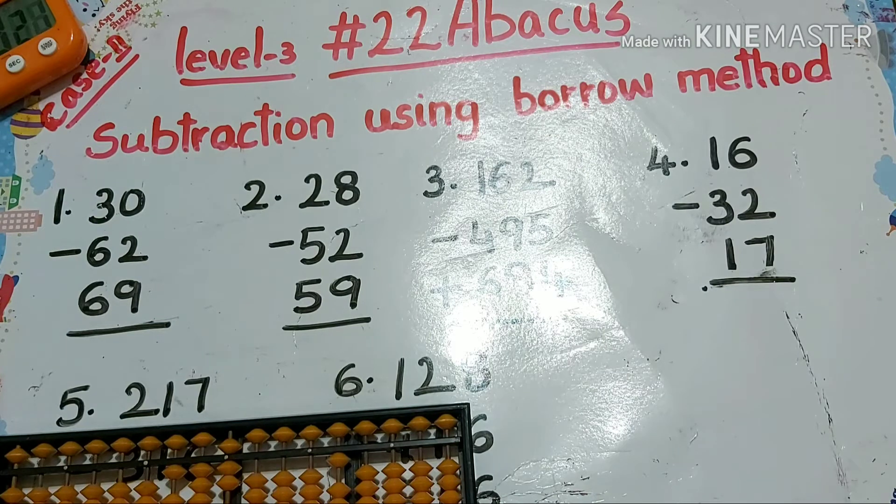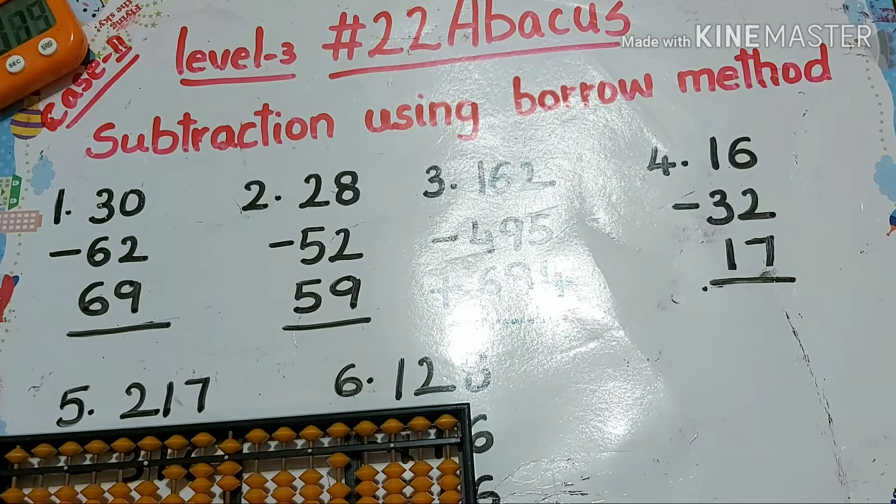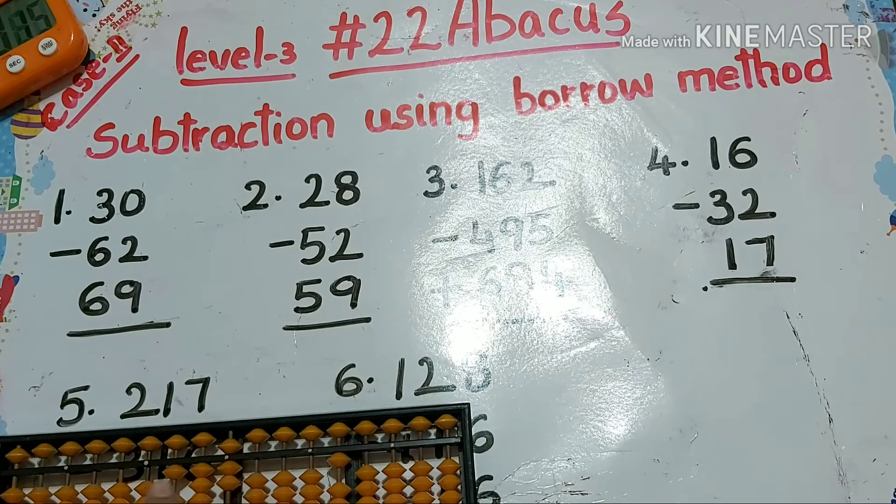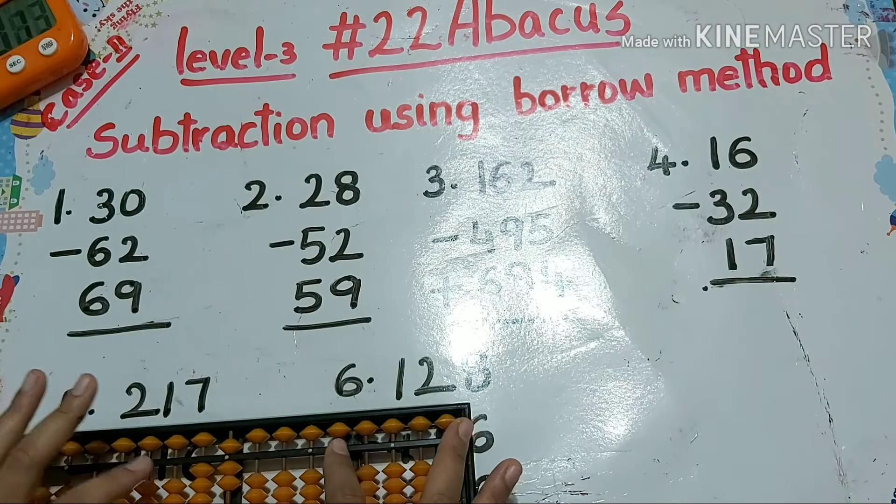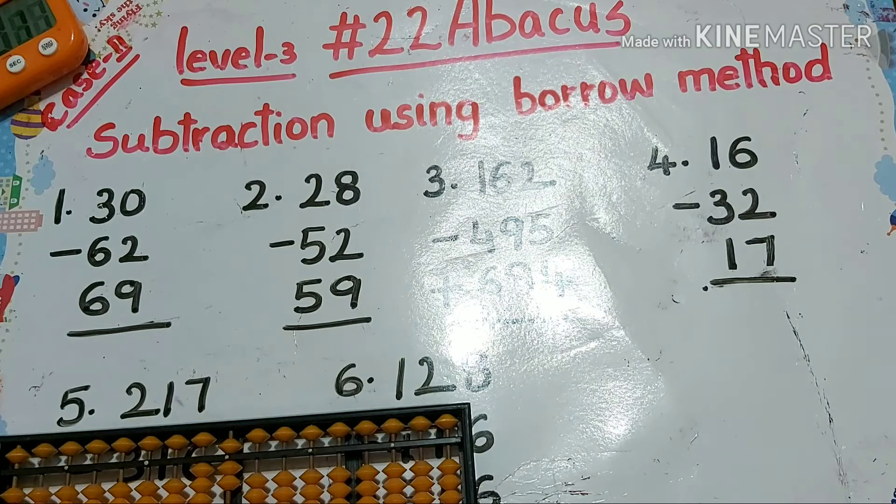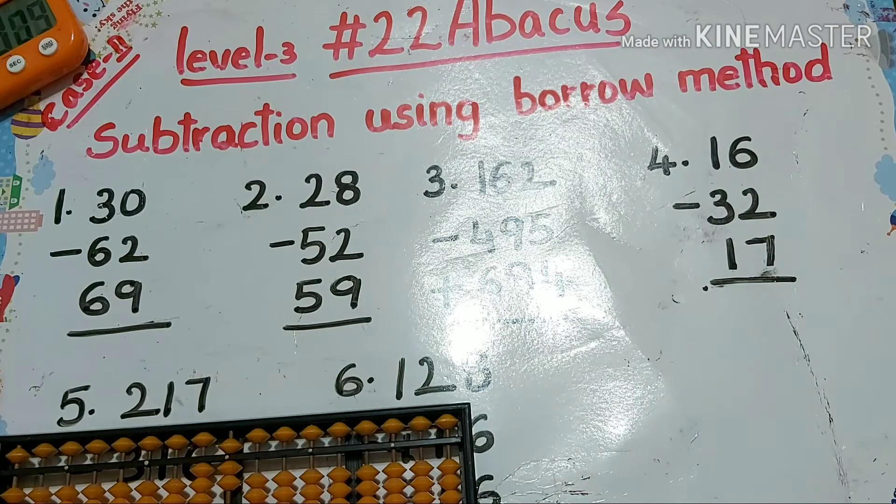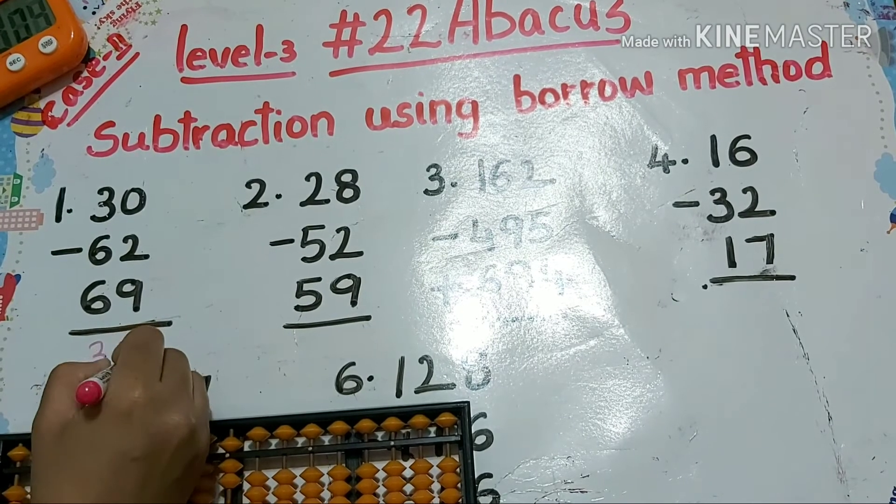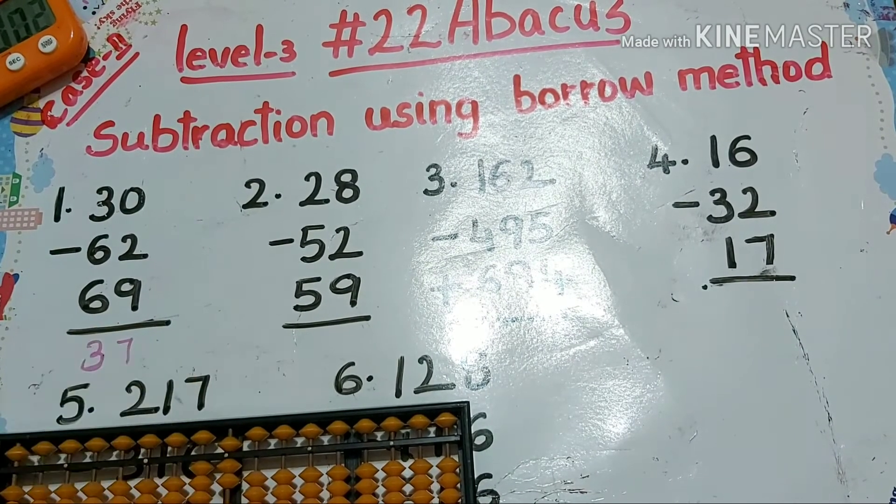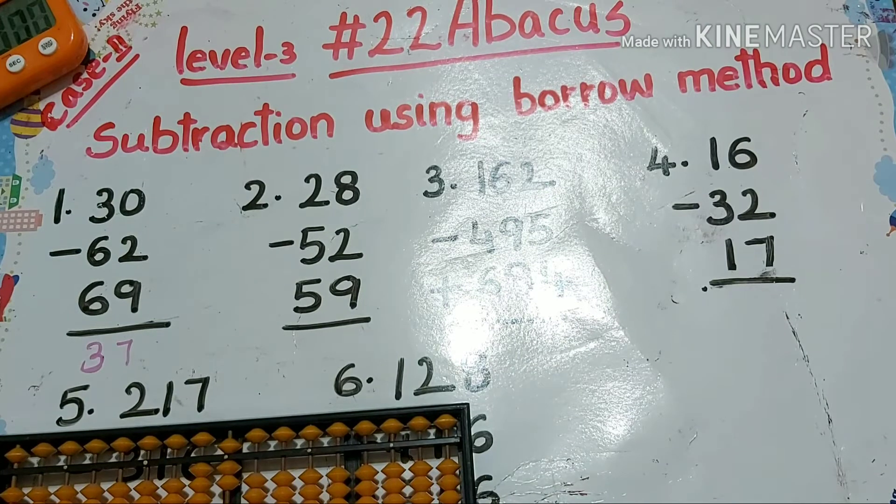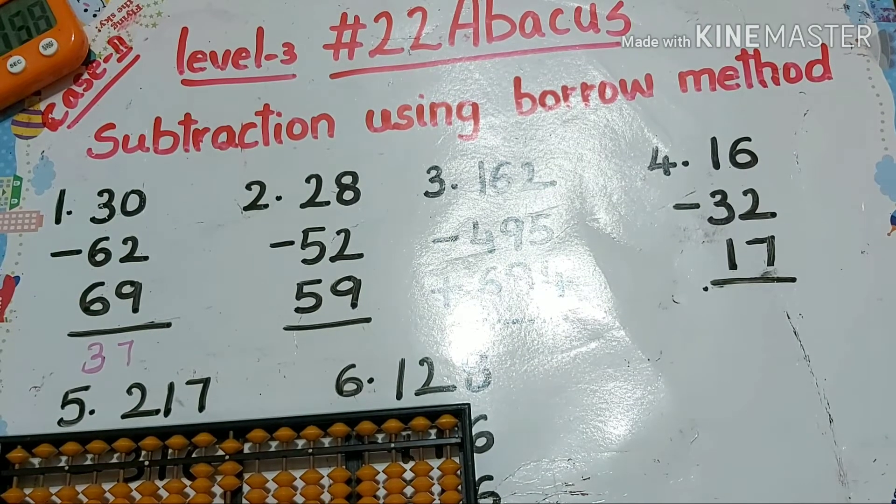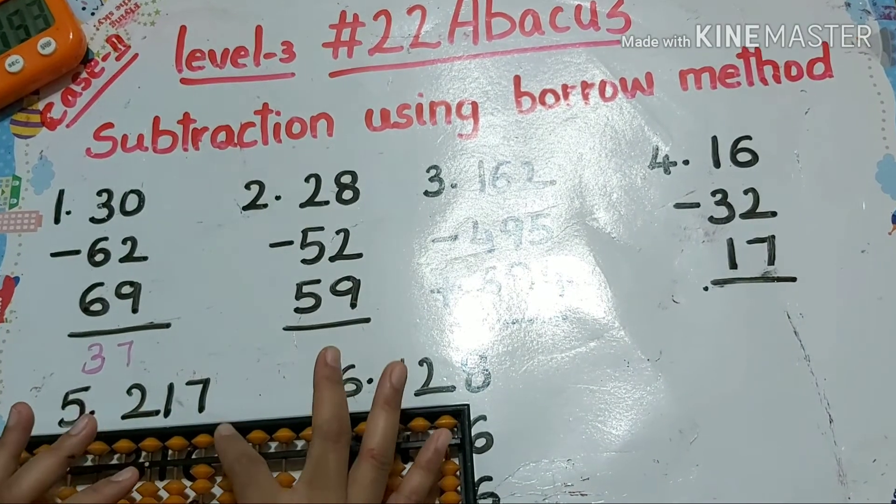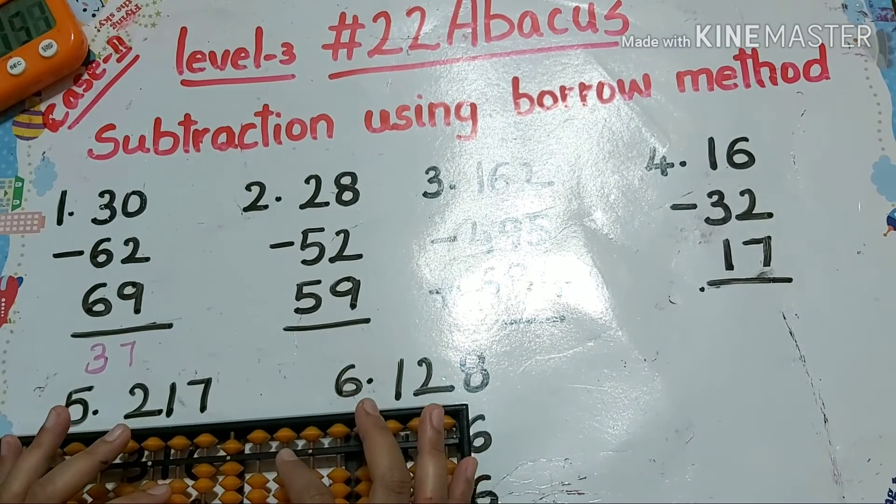Now here it's not our answer. I told you right, whatever the borrow bit we have taken, we should return that borrow bit. So I have taken out the borrow bit. Now this is our answer: 37. It's not a complement, that's why we don't need to add a minus symbol. We have more positive compared to negative values.